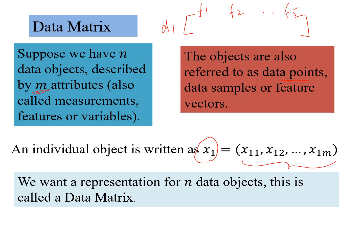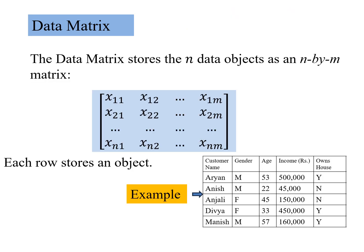The objects also can be called data points, and any individual object x1 or d1 is written in this manner. x11 is the value of the first feature f1 for this data object x1. x12 is the value of the second feature for x1, and similarly x1m. These objects we want to represent as a data matrix in this form.